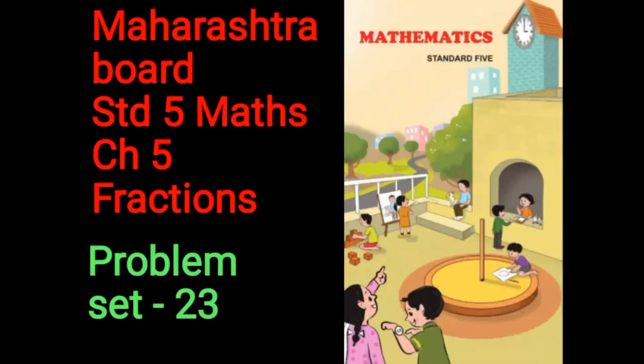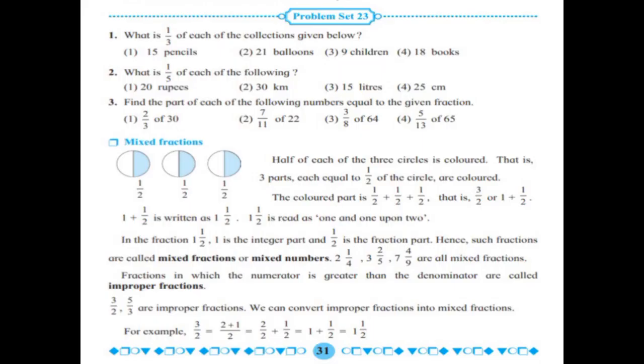Hello students and everyone, welcome back to Class 5 Maths on my YouTube channel. We will begin Problem Set 23 on textbook page number 31. What is 1 upon 3 of each of the collections given below?